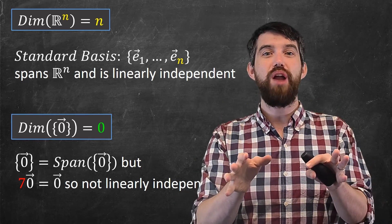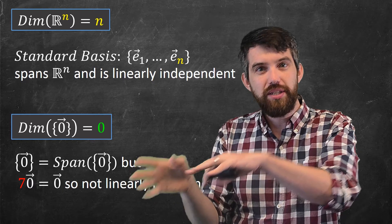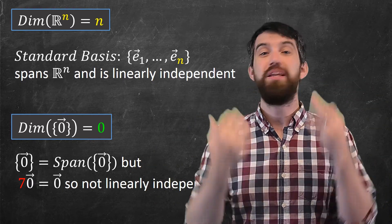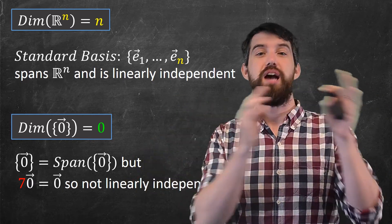In the next video, I'm going to look at what is the dimension of the null space and the column space. As in, I need to figure out how many basis vectors are there in the null space and the column space.